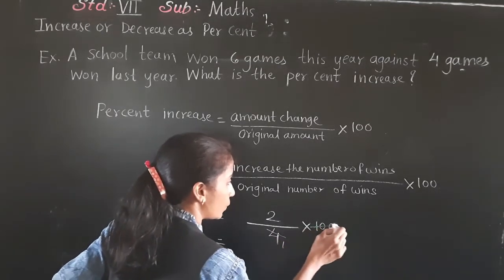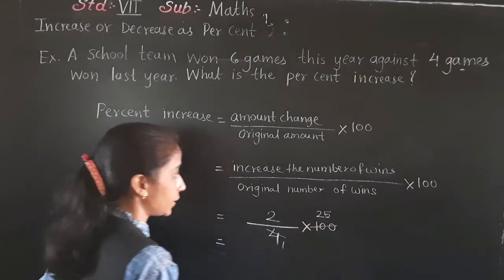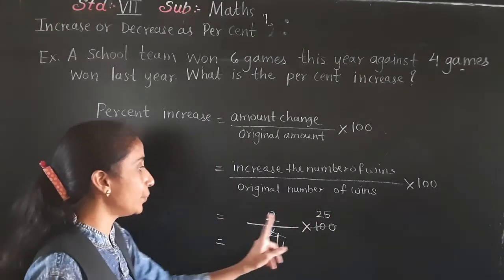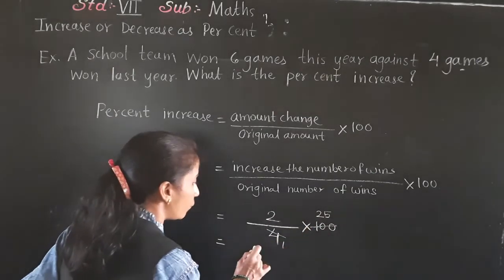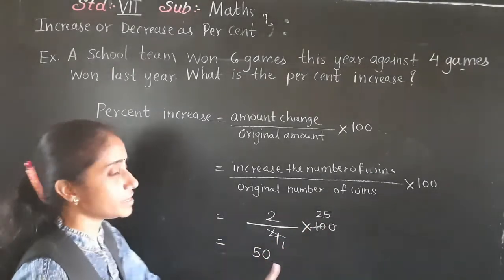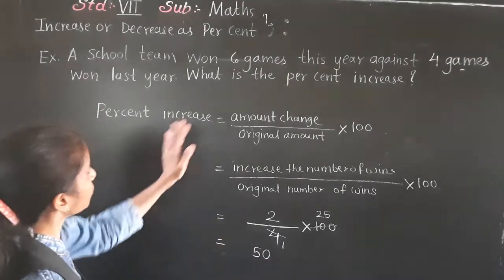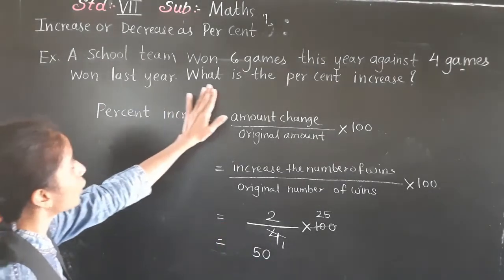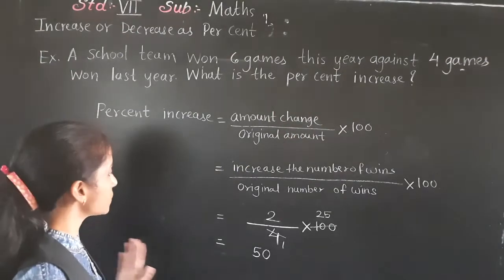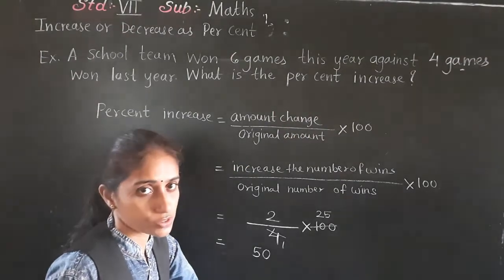Now do this calculation. 2 divided by 4, multiplied by 100. This simplifies: 2 upon 4 times 100 gives 50. So percent increase is 50.